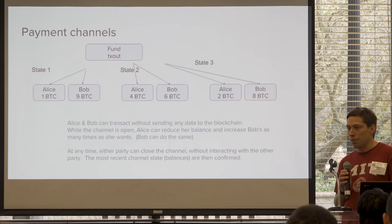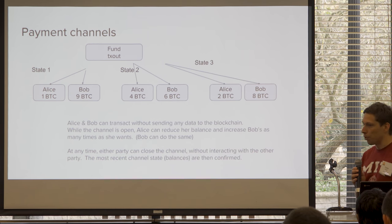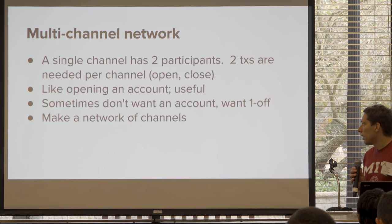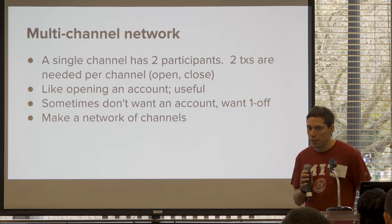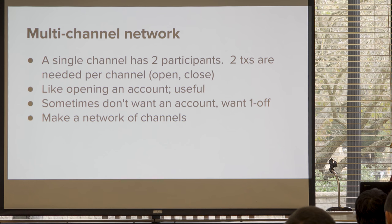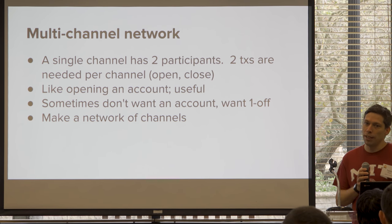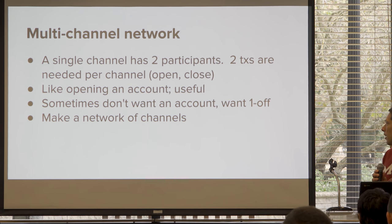The basic idea of a payment channel: have a single output, and keep trying to spend it with different transactions. In Bitcoin these are all basically double spends — only one can ever get confirmed into a block, because they're spending the same transaction output. That's really cool — you can have two participants keep sending back and forth. It's like opening an account, and it's very applicable to things like exchanges where you have a relationship and are sending money back and forth. But sometimes you want one-off payments, and that enables more scalability too. So you could make a network of channels.